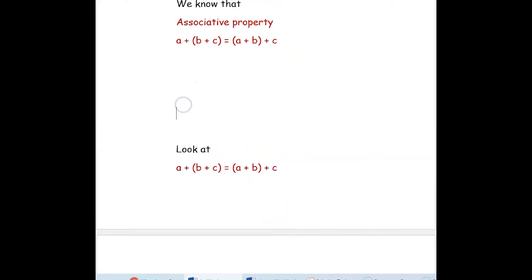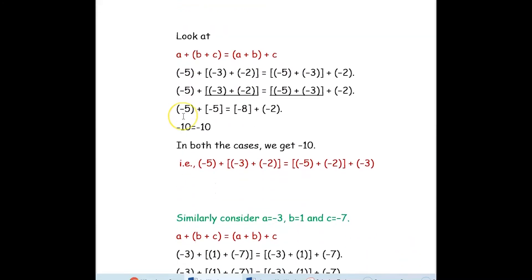We will apply the given numbers into the associative property and check whether it holds good or not. Substituting the values: a is negative 5, b is negative 3, c is negative 2. Now we simplify the numbers inside the parenthesis — negative 3 plus negative 2 gives negative 5, because plus and negative becomes negative.